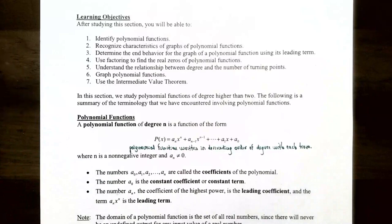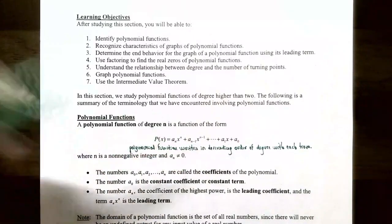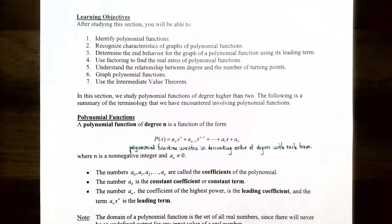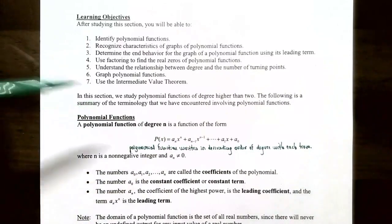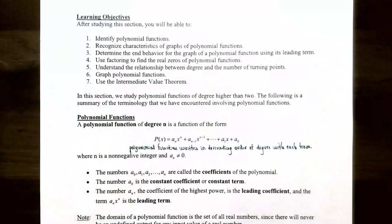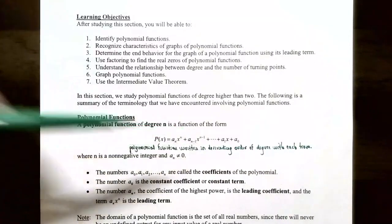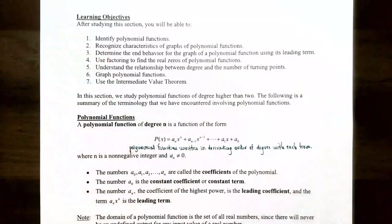The values a sub 0, a sub 1, a sub 2, all the way up to a sub n are called the coefficients of the polynomial. a sub 0, the last term with x to the 0 power, is called the constant coefficient or constant term. a sub n is called the leading coefficient, and the term a sub n times x to the n is called the leading term. When written in descending order, the term with the highest power of x is the leading term, going down to the lowest power.